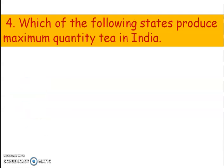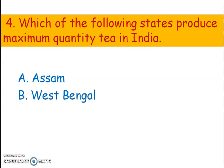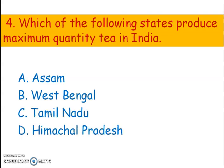Next question. Which of the following states produces the maximum quantity of tea in India? Options: A) Assam, B) West Bengal, C) Tamil Nadu, D) Himachal Pradesh. The right answer is option A, Assam. India produces around 1.3 million tons of tea per year, and Assam accounts for more than 50% of production.